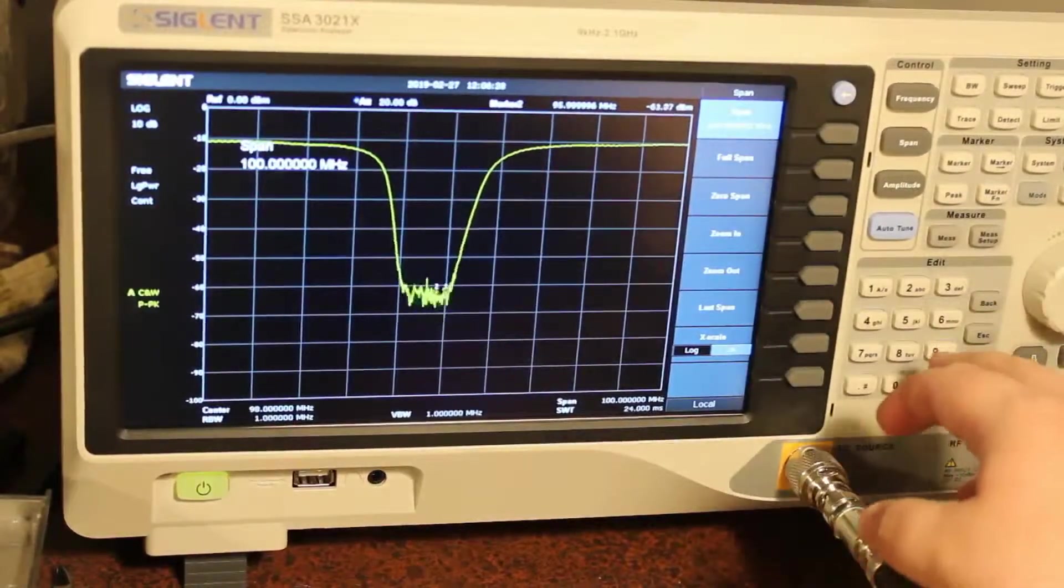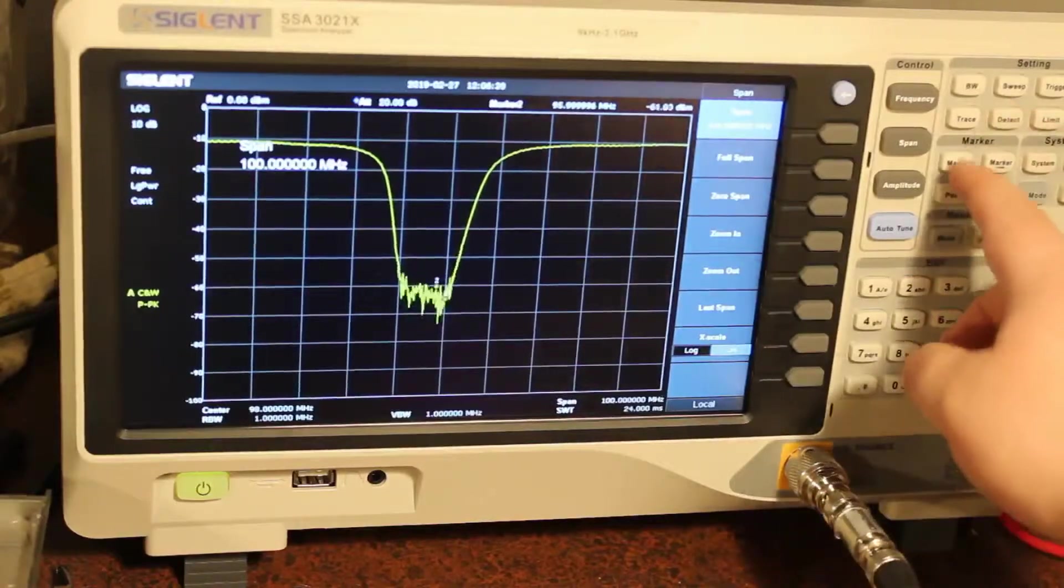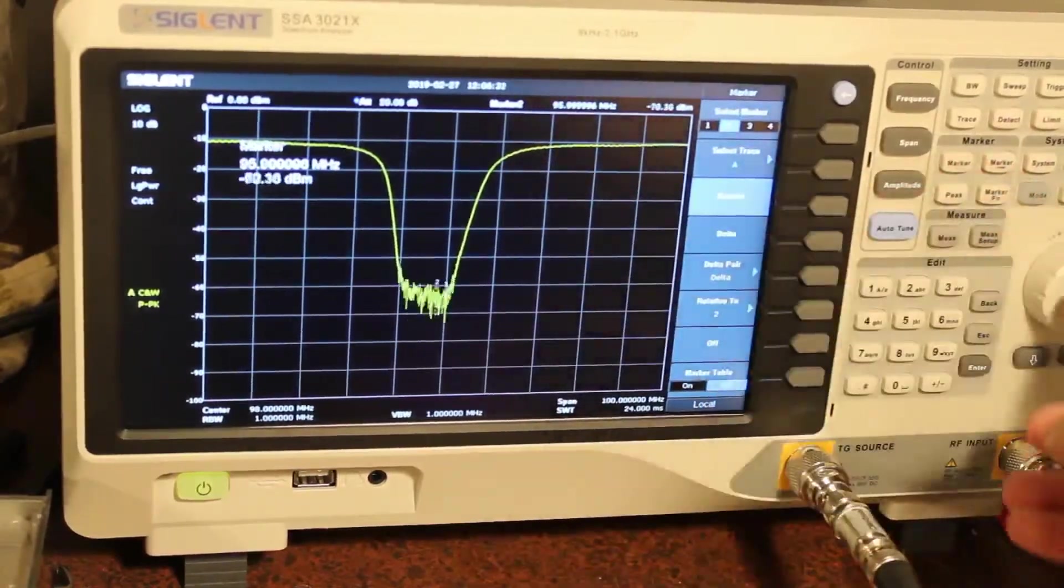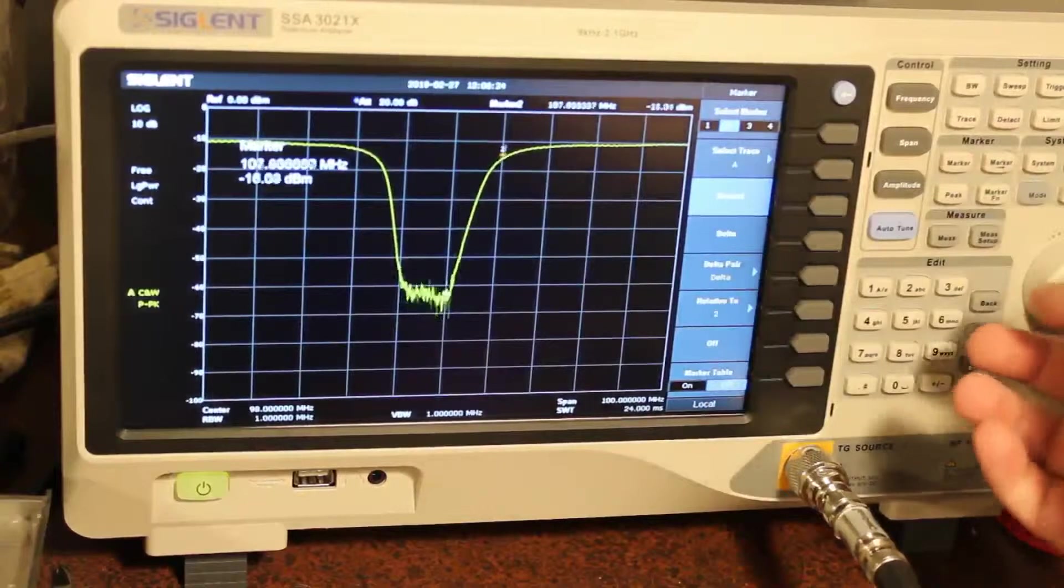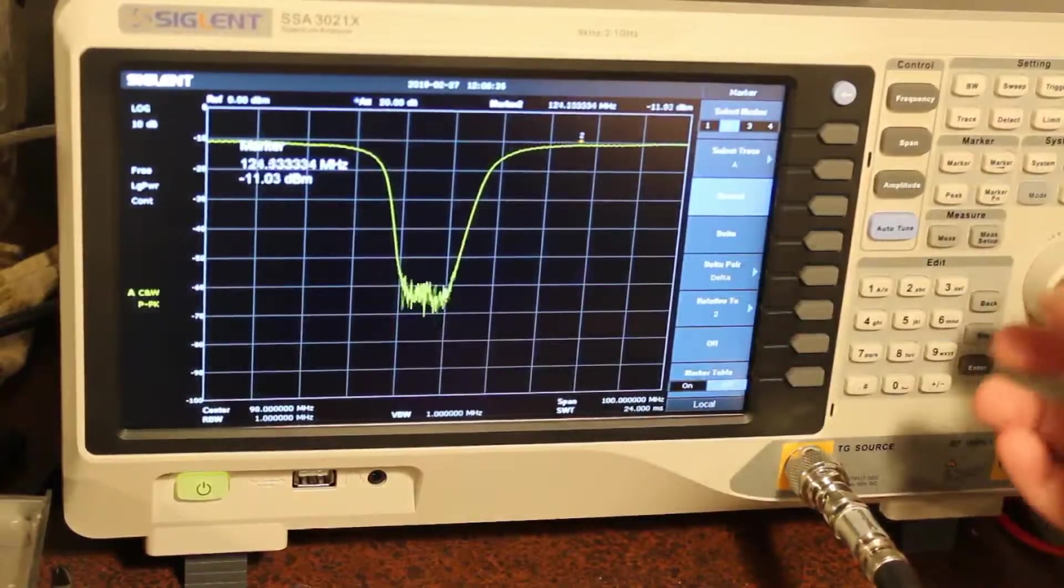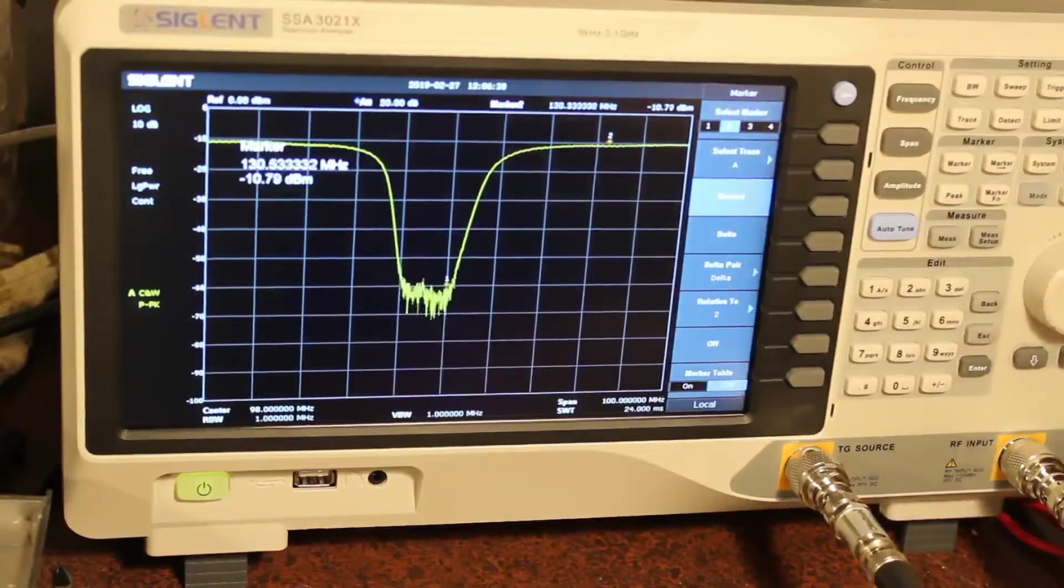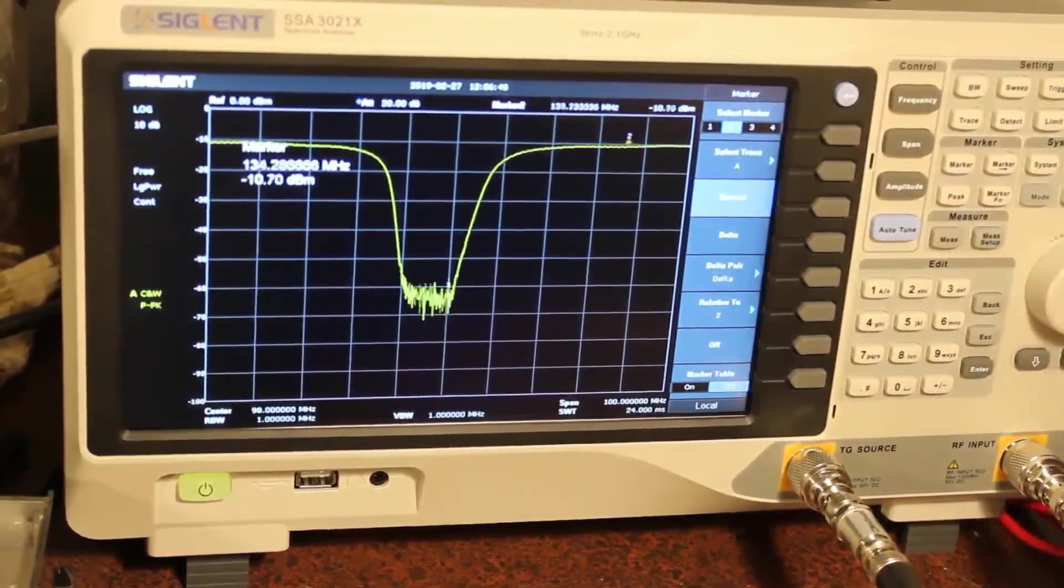And you can see it's got very nice characteristics. In fact, let's go for a walk. So let's take our marker number 2 up here, up band, and take a look. So for instance, I want to listen to stuff in the 144 MHz range, in 150 MHz, 160 MHz.